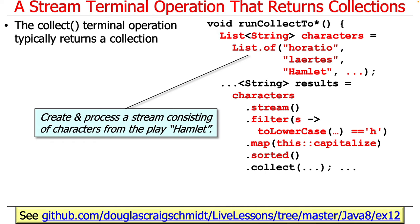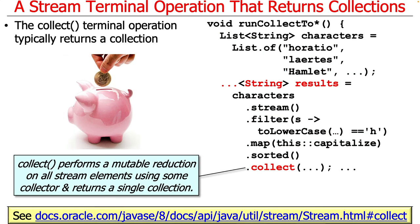The example we're going to look at is our Hamlet example, where we have a list of characters from Hamlet, which we convert into a stream, get rid of anything that's not lowercase or uppercase H, capitalize everything consistently, and sort it. Then we're going to collect things. Collect is going to perform a so-called mutable reduction — I'll explain why it's mutable when we contrast it with the reduce operation, which is an immutable reduction. Collect performs a mutable reduction on all stream elements using some collector passed in as the parameter, and it often returns a single collection.